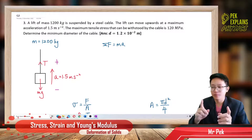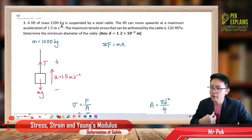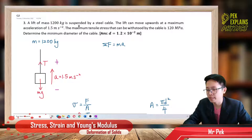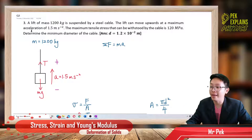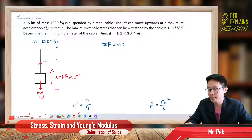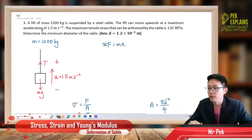Now the third question. A leaf of mass 1,200 kilograms is suspended by a steel cable. The leaf can move upwards at a maximum acceleration — that means it accelerates up, so it is not in equilibrium. It has an acceleration of 1.5 meters per second squared.